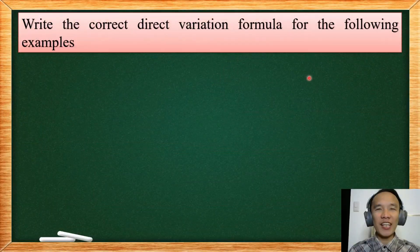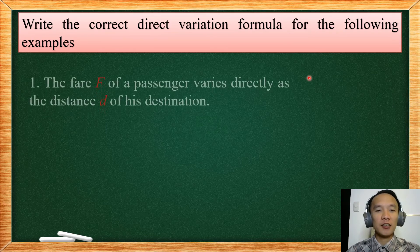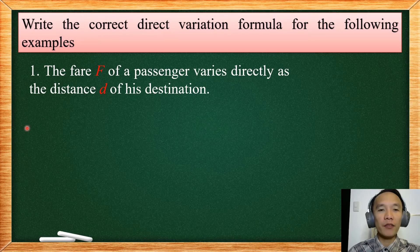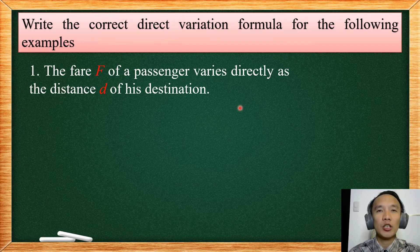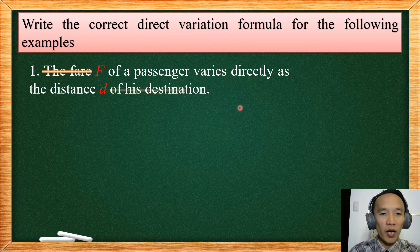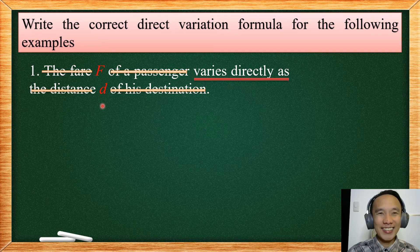So let us have an example on how to write the formula for a direct variation. So here we have the word, the fair F of a passenger varies directly as the distance D of his destination. In solving direct variation, you just have to simply find the important words. So we are going to eliminate the unnecessary words. So the word is just saying F varies directly as D. In formula, that's F equals to KD.